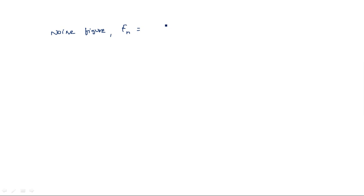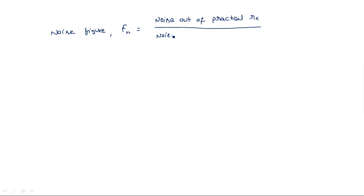Noise figure is defined as the ratio of noise out of a practical receiver to the noise out of an ideal receiver. That is, it is the ratio of the total noise present at the output of a practical receiver divided by the noise present at the output of an ideal receiver.